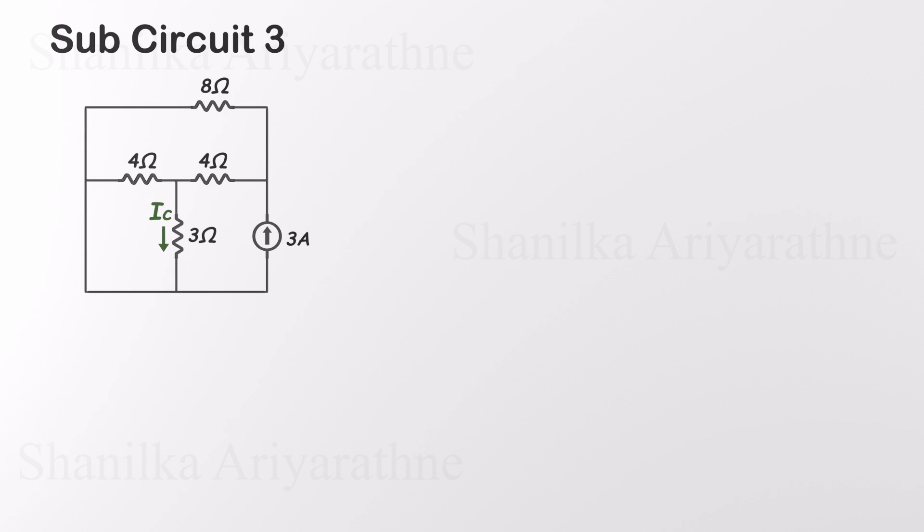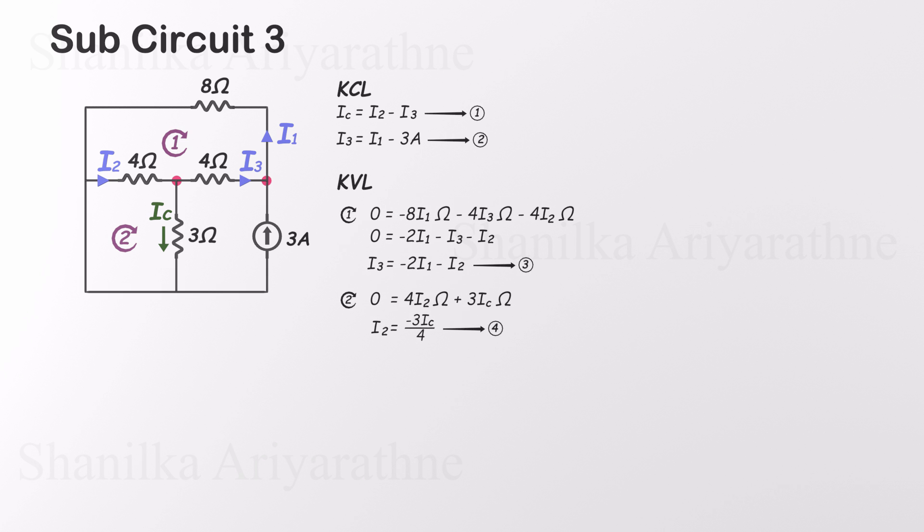Now let's solve the third sub-circuit and calculate IC. First we label the currents in each branch. In this setup, we have four unknowns: IC, I1, I2, and I3. So we'll need to build four equations using Kirchhoff's current law and Kirchhoff's voltage law. Starting with KCL at the first node, we get IC equals I2 minus I3. At the second node, we apply KCL again and get I3 equals I1 minus 3 amps. Now it's time to apply KVL, but with a small warning: Avoid loops that contain the current source, because we don't know the voltage across it. So we focus on the two loops that don't include the current source. By applying KVL to these two loops, we get two more equations relating the currents. That gives us a total of four equations, just what we need to solve for the four unknowns.